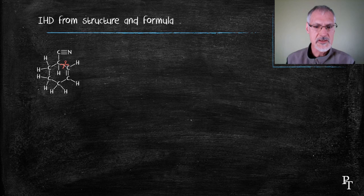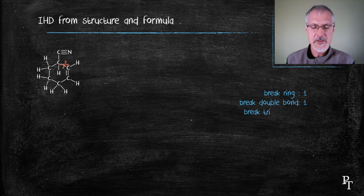Again, let's take a look at this molecule and make a prediction. If we take a look, we have to break a ring. We have to saturate a double bond and saturate a triple bond.